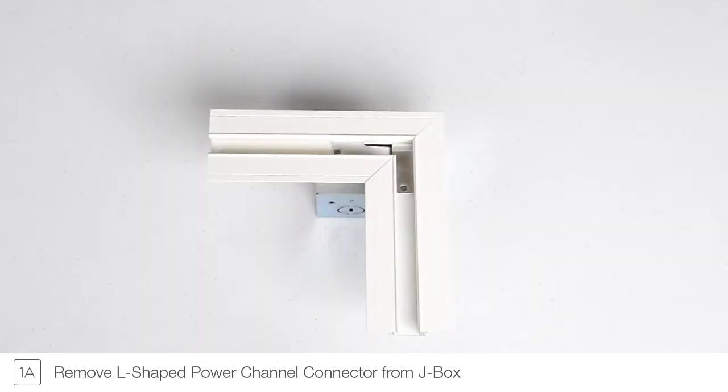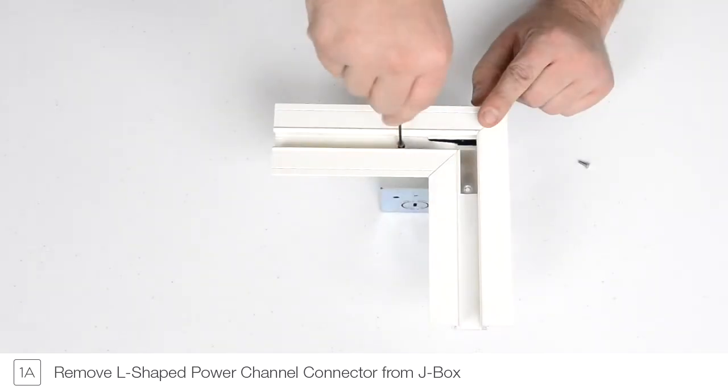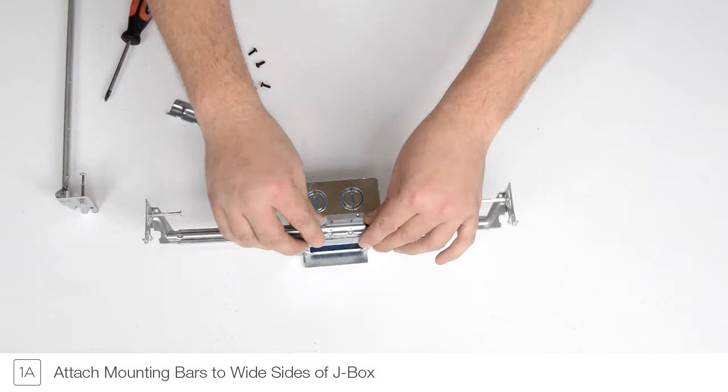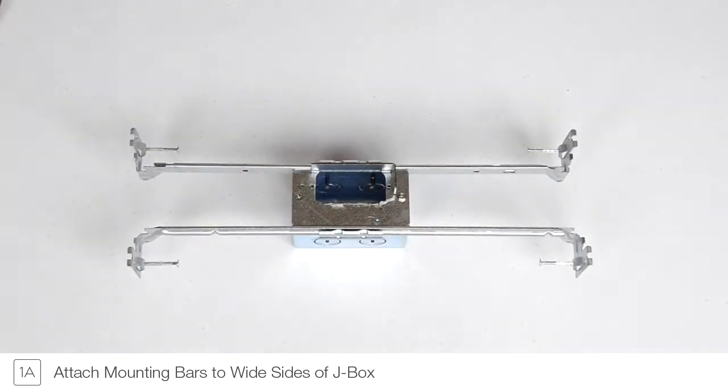Step 1A. Separate the L-shaped power channel connector from the junction box. Attach the supplied mounting bars to the sides of the junction box as shown.